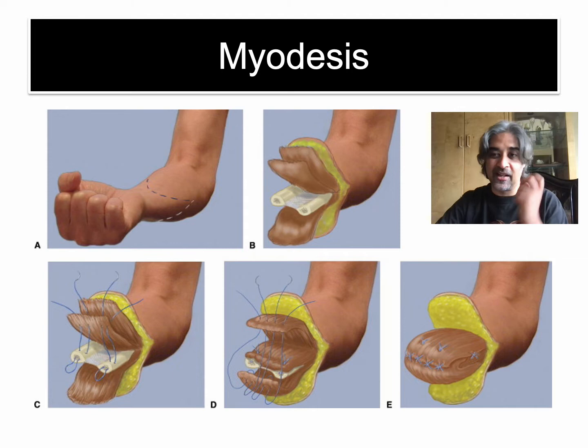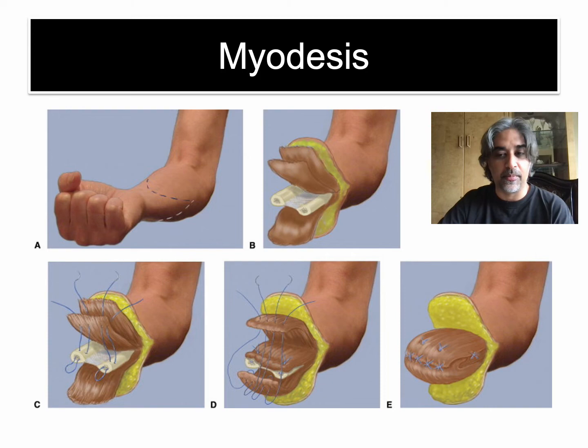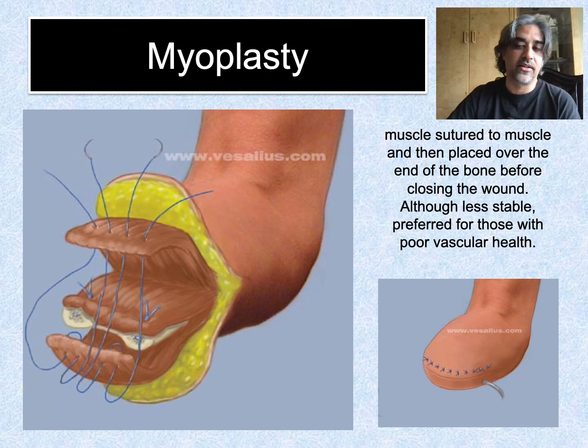Myodesis is a little more challenging but gives you more stability. You can see the fish mouth incision, the muscle, fascia, adipose tissue, and skin — then they sew the muscle into the bone or tendon and close it up. That's going to be really stable, but it needs good, young, healthy tissue to heal as well as a myoplasty would. Myoplasty is easier and allows the muscles to flop around a bit more, but it is preferred for our dysvascular patients.